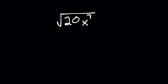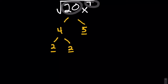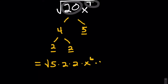Our next example is the square root of 20x to the seventh. We're going to have to do two things: take care of that odd power of x, and take care of that 20. For this we'll employ the factor tree method. 20 can be written as four times five. Five is prime, and four is two times two — both prime. We'll rewrite our radical: for the 20 we have five times two times two, and for x to the seventh we rewrite that as x to the sixth times x.